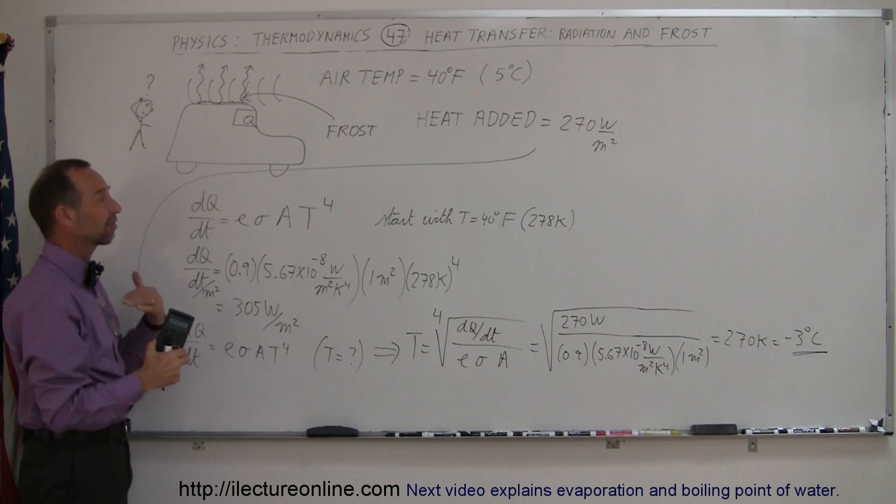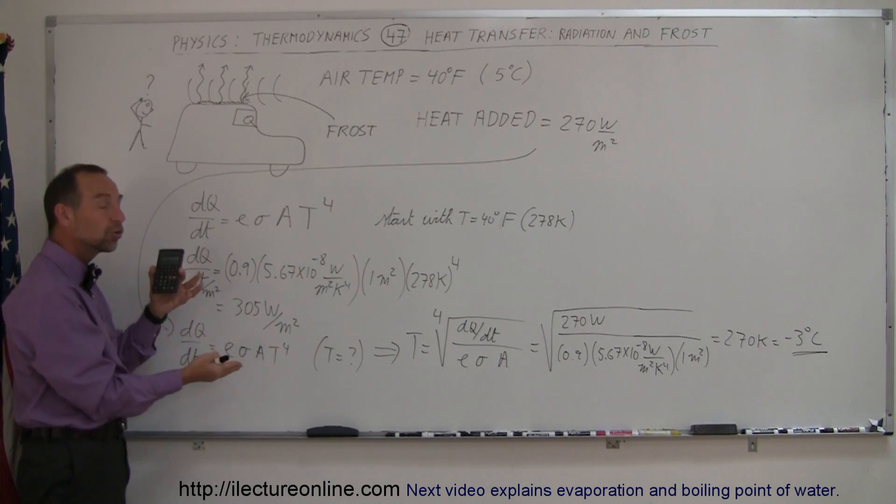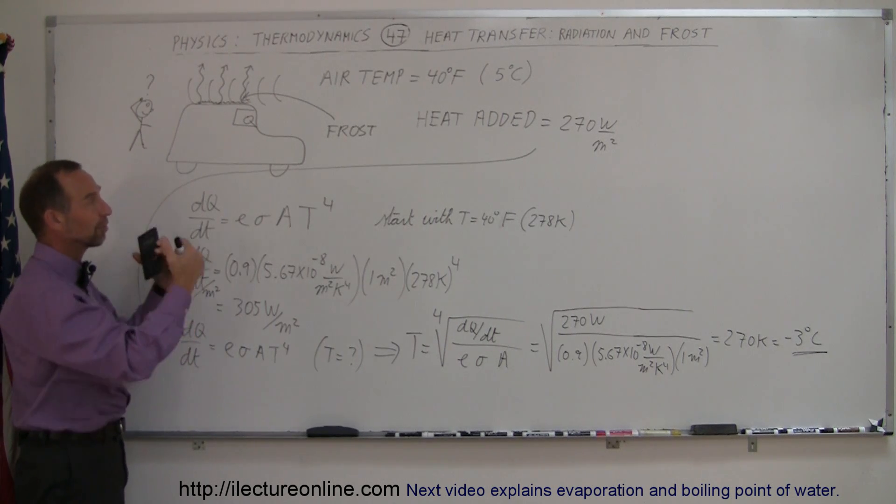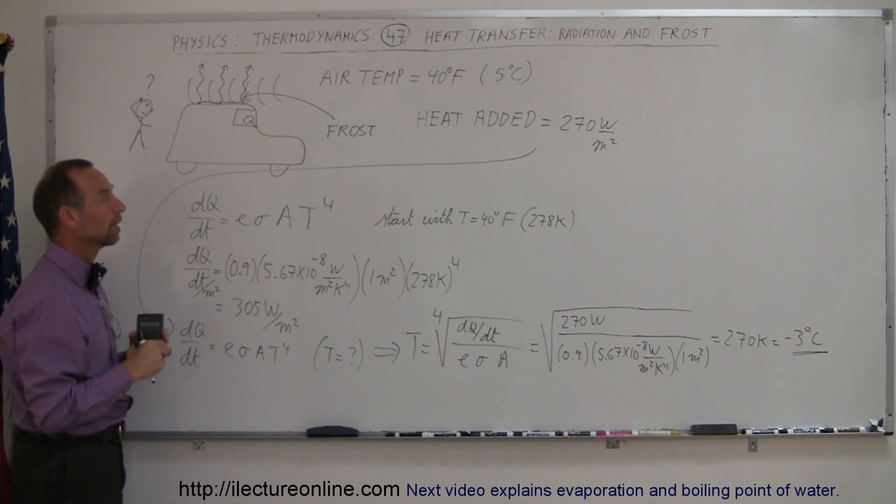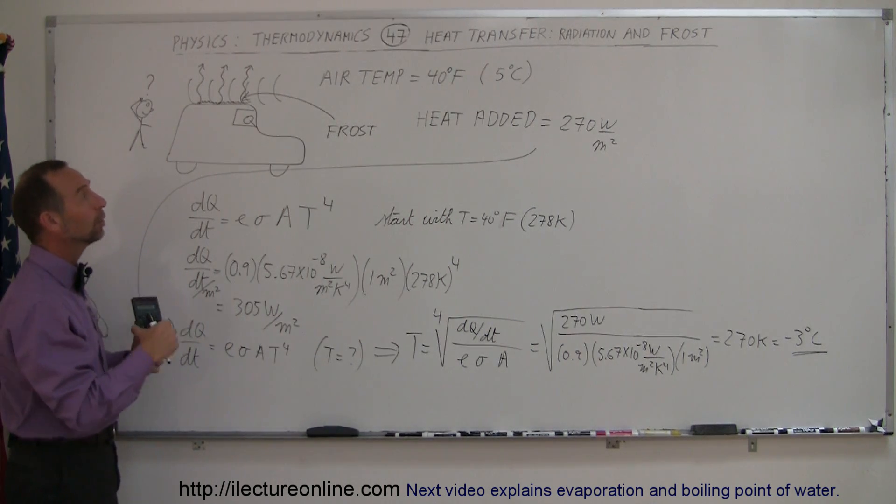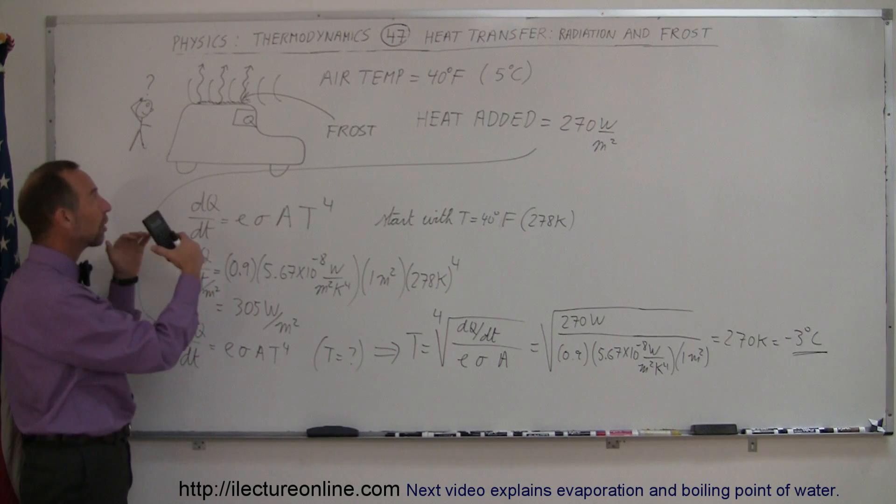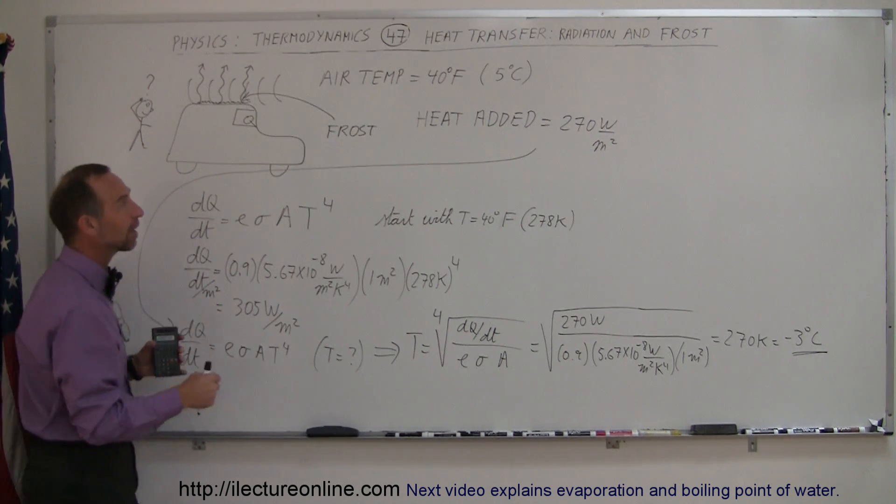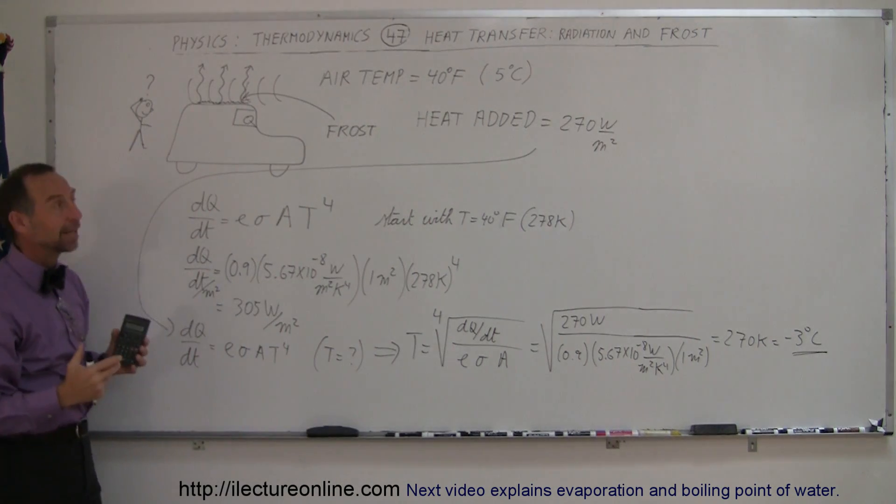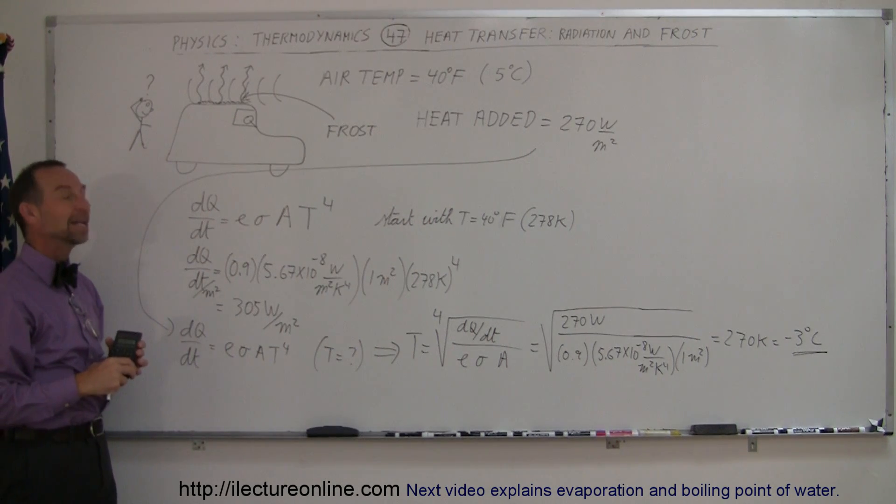those little droplets of dew will begin to freeze, and a layer of frost will develop on top of the car. You'll see frost develop on grass and all kinds of things, but when you look underneath a tree, you probably won't find any frost there, because then you're protected from the radiation reaching space. So there's an interesting example of how radiation at night can cause frost to develop on cars, objects and grass when the temperature of the air is not below freezing.